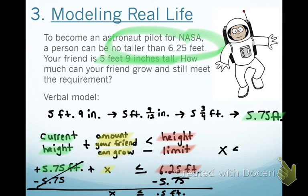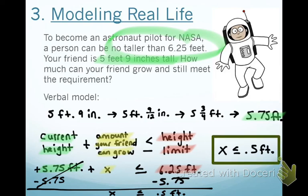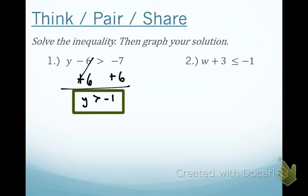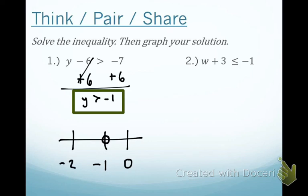For the review problem: the variable is Y. Get rid of negative 6 by adding positive 6. These cancel out. Y is greater than. What's negative 7 plus 6? Negative 1. All solutions are greater than negative 1. The three numbers on the number line should be negative 2, negative 1, and 0. Make sure you have an open circle — you will lose points if you don't show whether it's open or closed. All solutions are greater than, so the arrow goes to the right. Double check: the arrow and the inequality symbol should look alike.